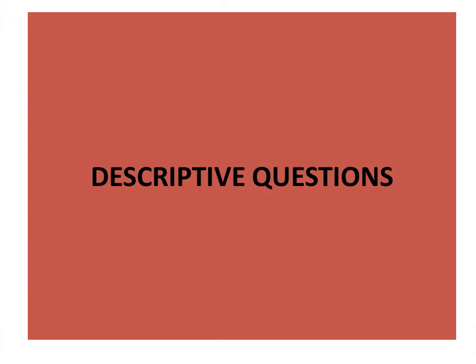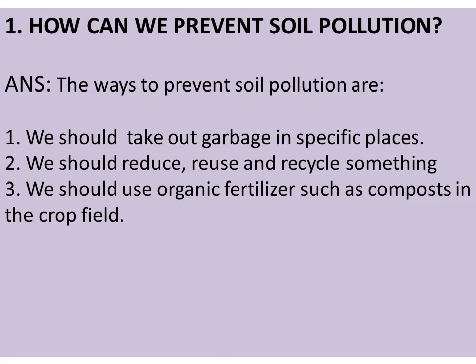Now we will learn descriptive questions. Number 1: How can we prevent soil pollution? Answer: The ways to prevent soil pollution are — Number 1: We should take out garbage in specific places. Number 2: We should reduce, reuse and recycle. Number 3: We should use organic fertilizer such as compost in the crop fields.